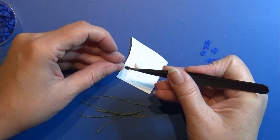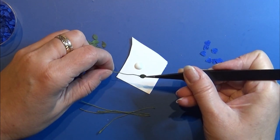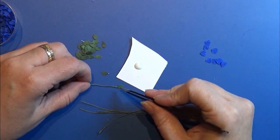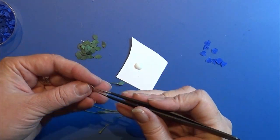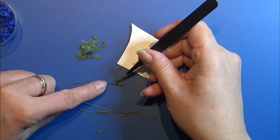I'm using a normal white school glue and I'm taking these small green leaves and dipping into the glue and I'm gluing them on a thin green flower wire.